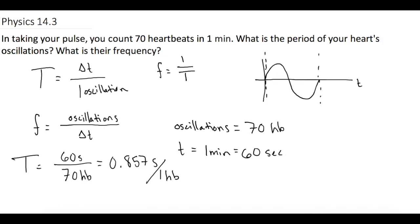So that is seconds per heartbeat, which is equal to 0.86 seconds for our period.